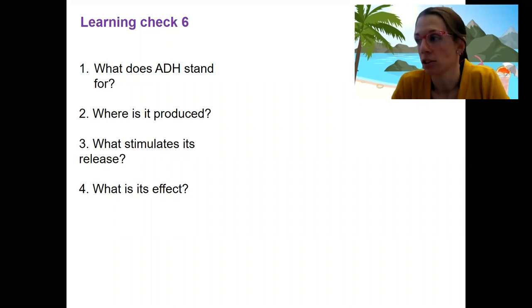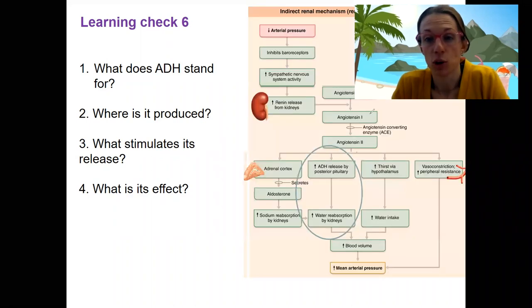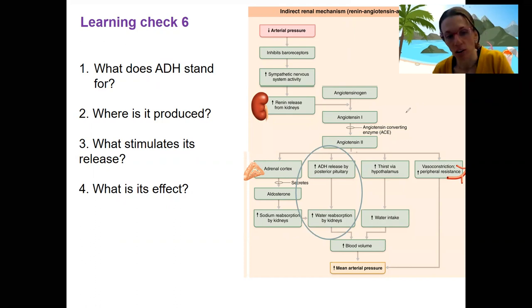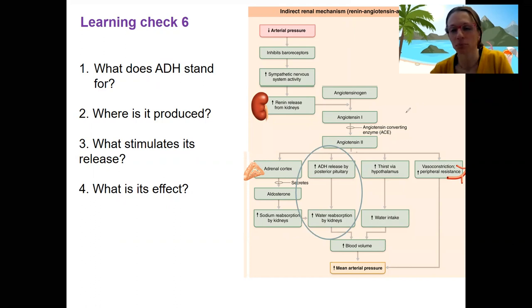Learning check about ADH. Here is a review of when you've seen this before. Antidiuretic hormone is from the posterior pituitary, triggered by angiotensin, also in response to low blood pressure, although we'll see other stimuli for it as well.